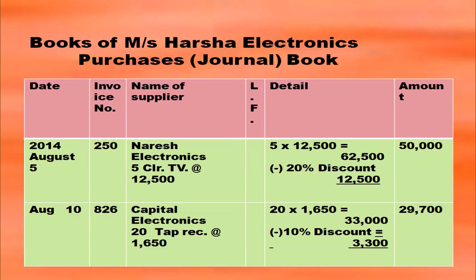Next date August 10th, invoice number 826, name of supplier: Capital Electronics. 20 tape recorders at rupees 1,650 written in the name of the supplier column. Calculation in the details column: 20 × 1,650 = 33,000. Trade discount of 10%: 33,000 × 10/100 = 3,300. So 33,000 minus 3,300 = 29,700.